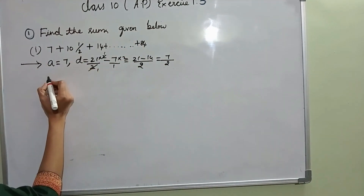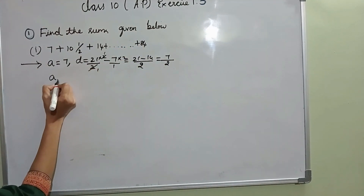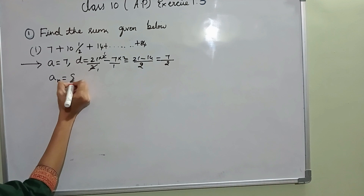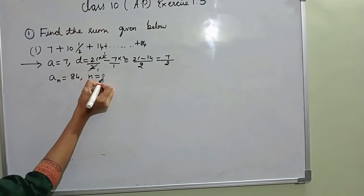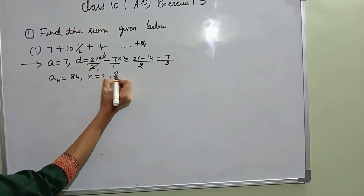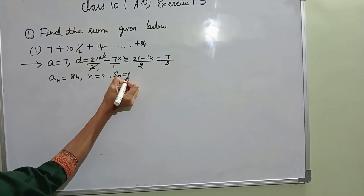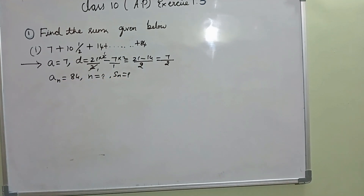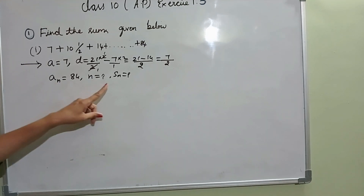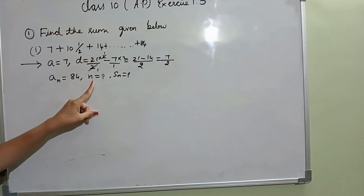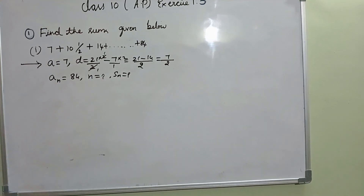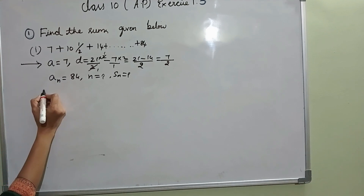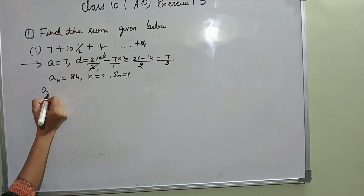The last term they have given is AN. N I don't know. SN I need to find. Since I don't know N, we first need to find the N value, then we go for SN. N — how to find the N value? Using the nth term formula.